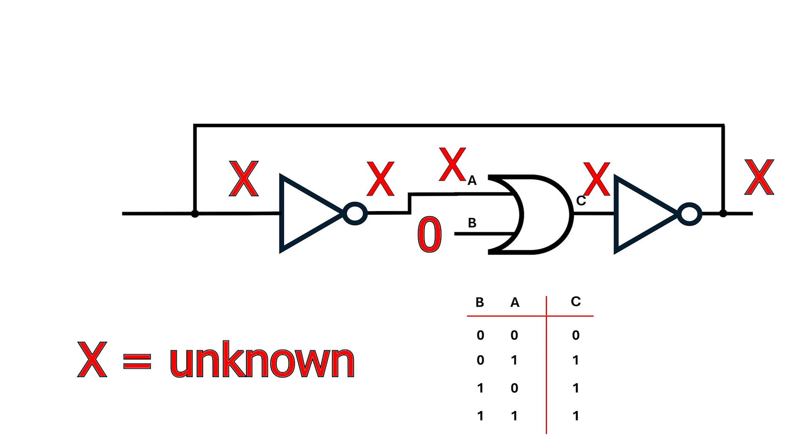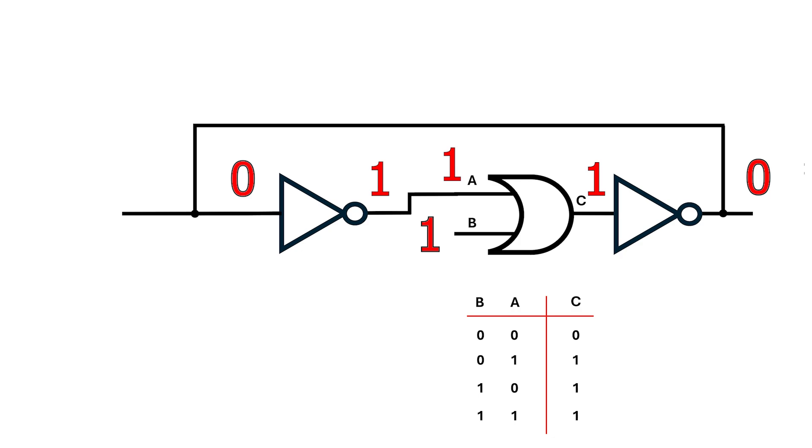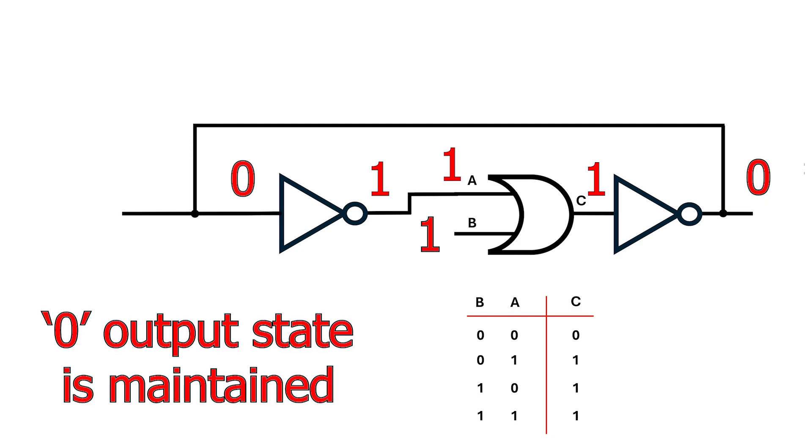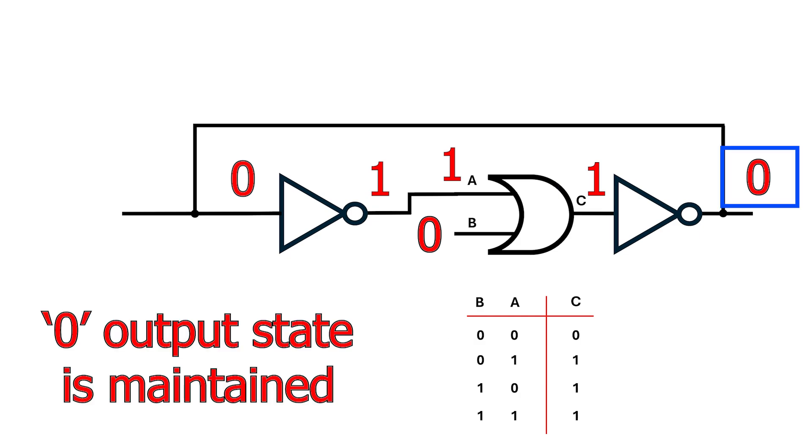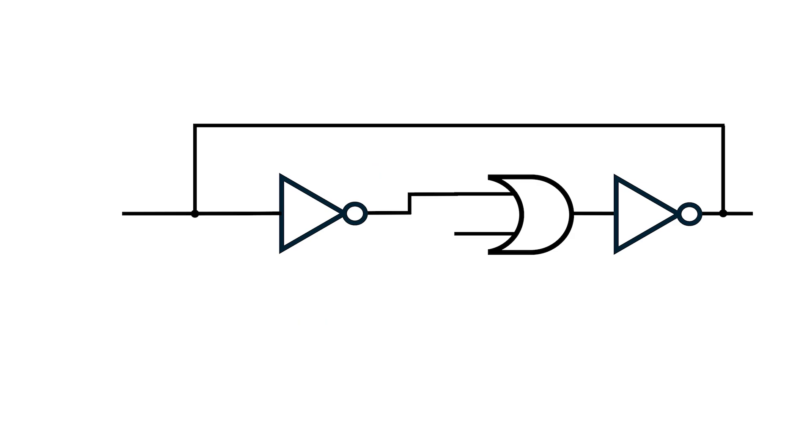Let's say we're in some unknown state and we assert B. Then it doesn't really matter what the other input to the OR gate is. The output will be one. This produces a zero on the output of the inverter which feeds back to the left inverter. It outputs a one. This feeds into our OR gate and the output of our OR gate stays one. This feeds into the right inverter which outputs a zero and the zero state's maintained. Now if we de-assert B or change it to zero, the OR gate still outputs one. This feeds into the right inverter and the Q equals zero output's maintained.